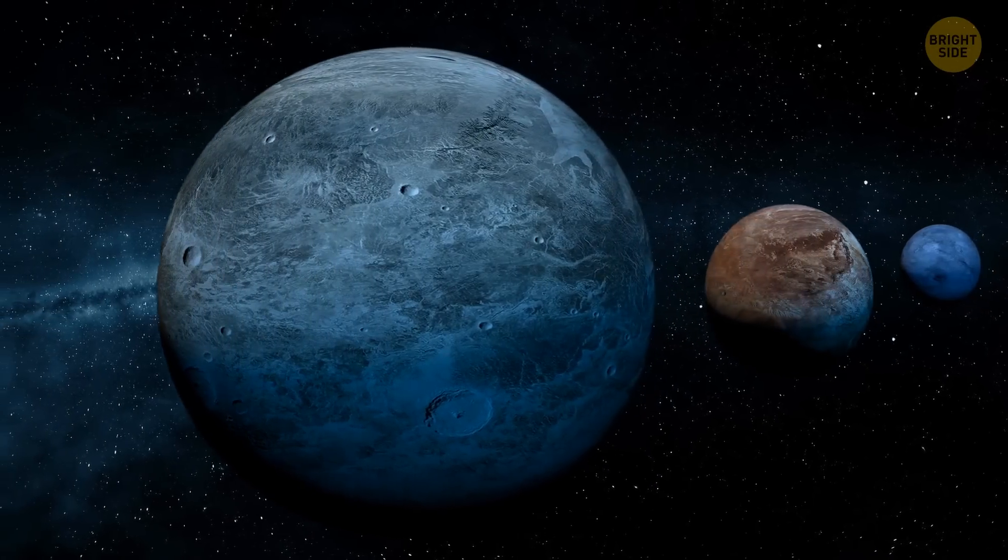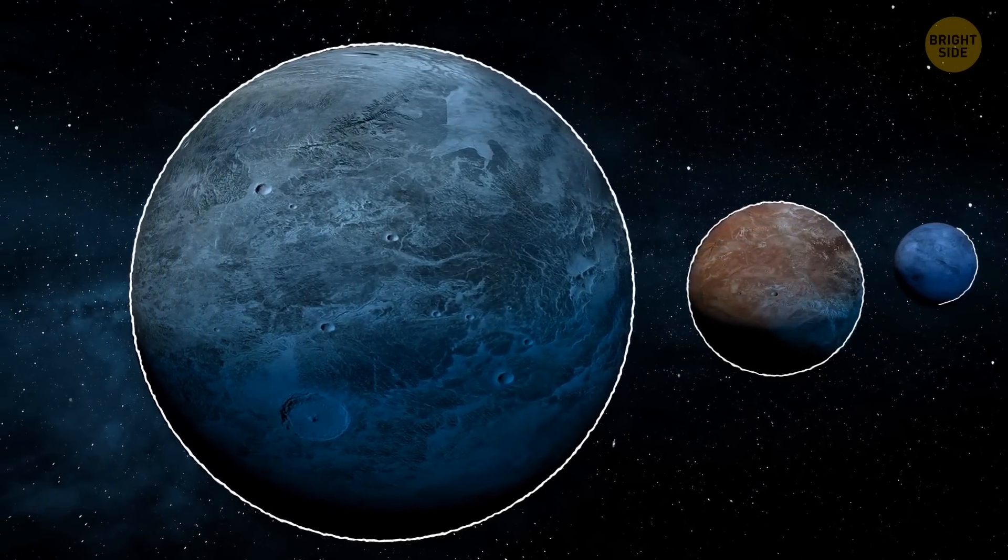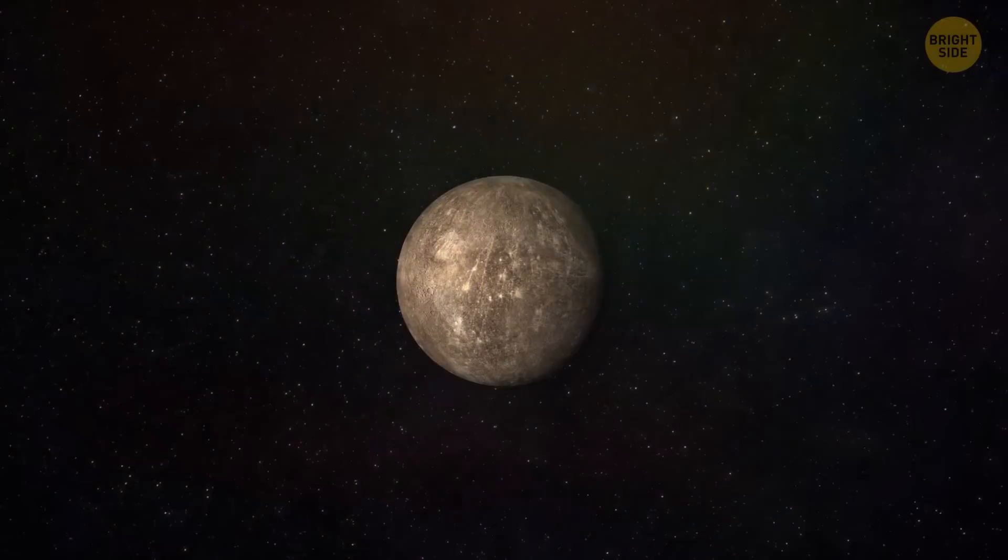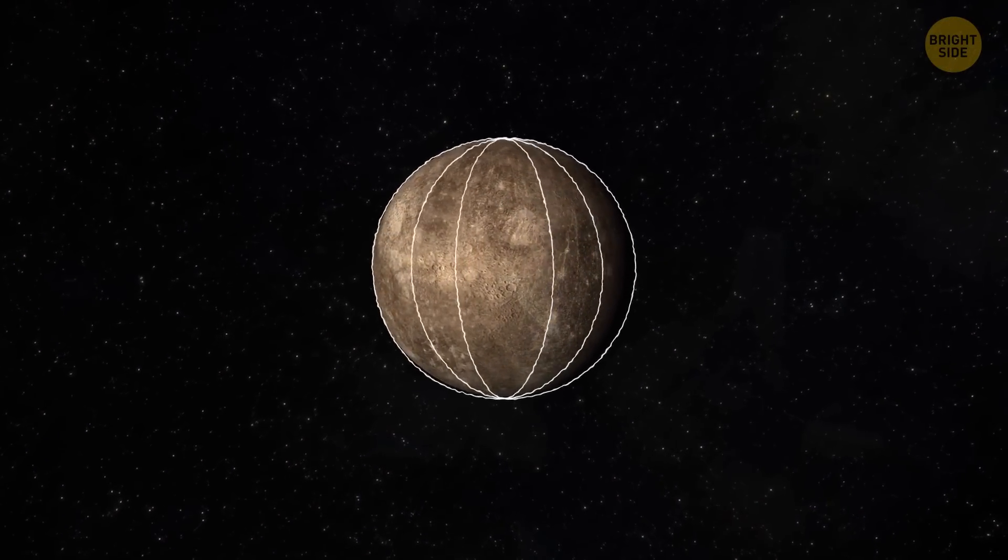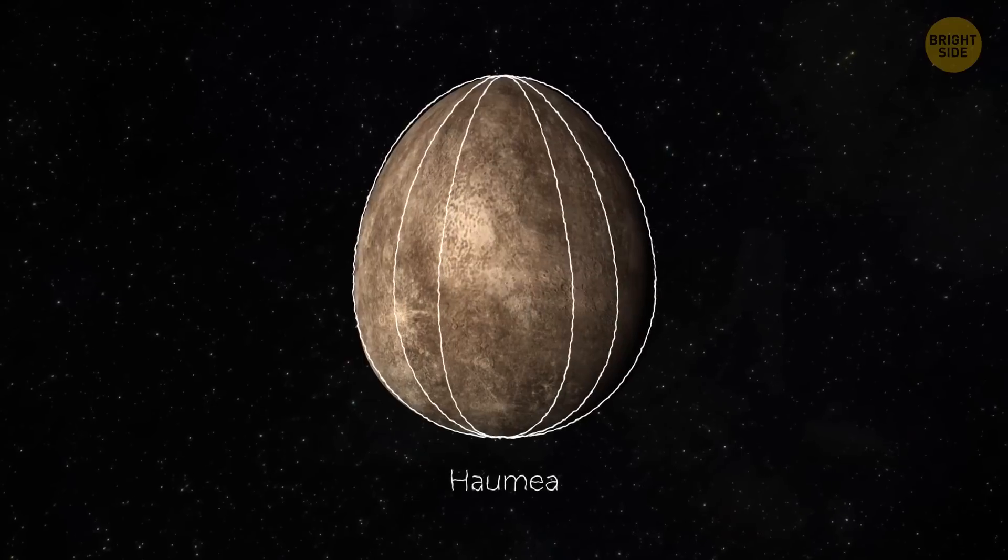There are a couple of differences between these two categories. The first obvious difference is size and mass. Major planets are much bigger and more massive. They also have to be spherical, while dwarf planets might not be perfect spheres and might have weird shapes, like an egg-shaped Haumea, for example.